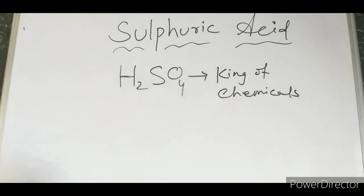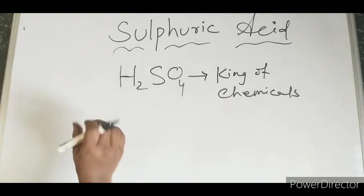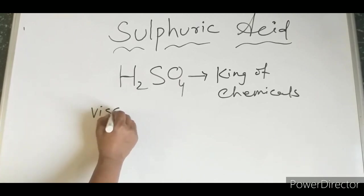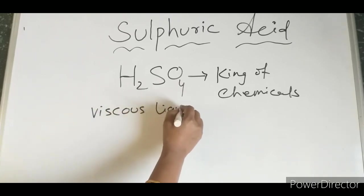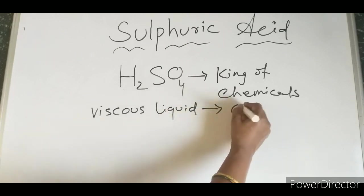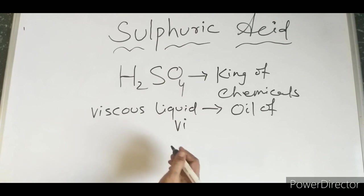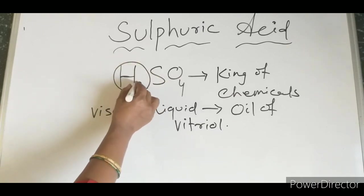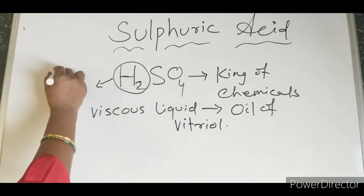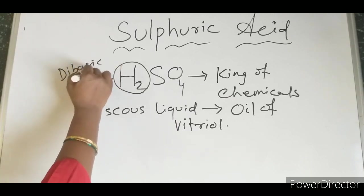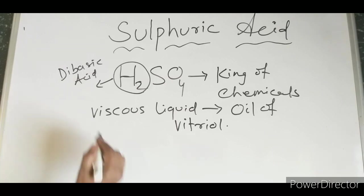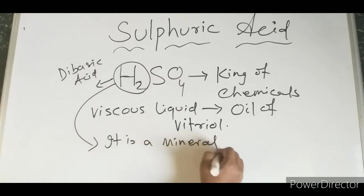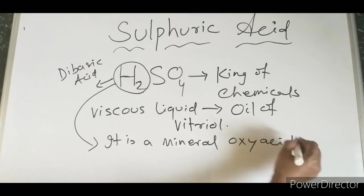Concentrated Sulfuric Acid is very thick. Due to its viscous nature, as it is a viscous liquid, it is known as Oil of Vitriol. It has two hydrogen atoms, so it is a Dibasic Acid. Sulfuric Acid is a Mineral Acid — specifically, a Mineral Oxi Acid.